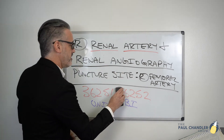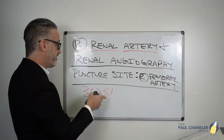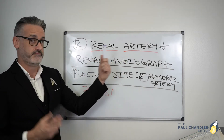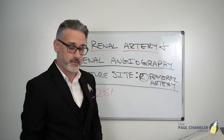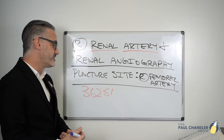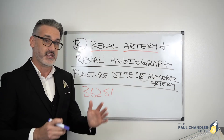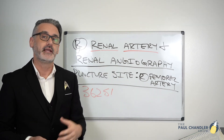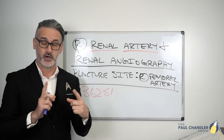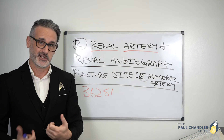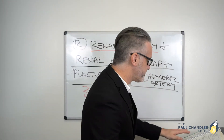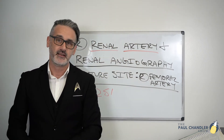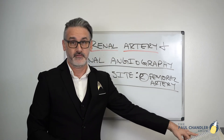We're doing two things: the selective catheterization of the right renal artery, and also a renal angiography. So we need to look at code 36251 and determine whether it covers both parts, or whether we need a separate code for the renal angiography. In other words, is 36251 a combination code? Looking at the description of 36251, toward the end of the second line, it says 'for renal angiography.'